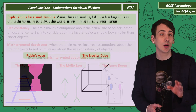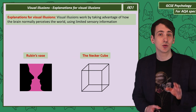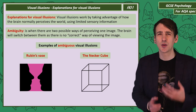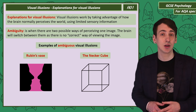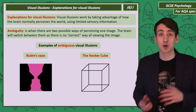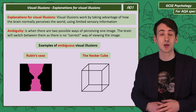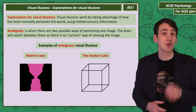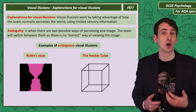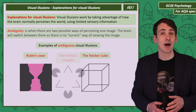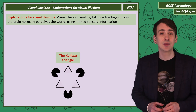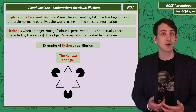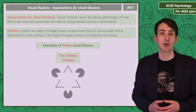Ambiguity is when the brain doesn't have any of the visual cues that suggest features like depth or distance, so there isn't a correct way of perceiving an image and the brain jumps back and forth between interpretations. The Rubin's Vase and the Necker Cube are both examples of ambiguous visual illusions. Finally, the Kanizsa Triangle is an example of a fiction — where the brain perceives something that isn't detected by the senses.